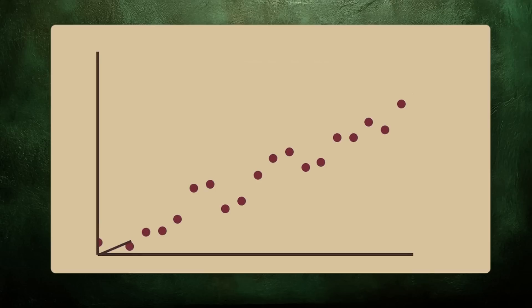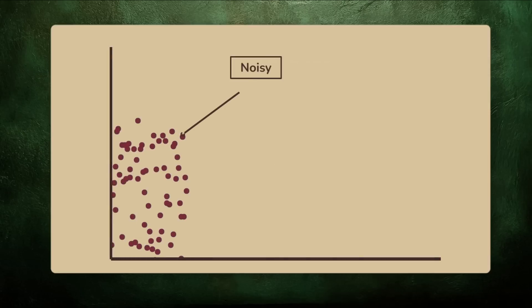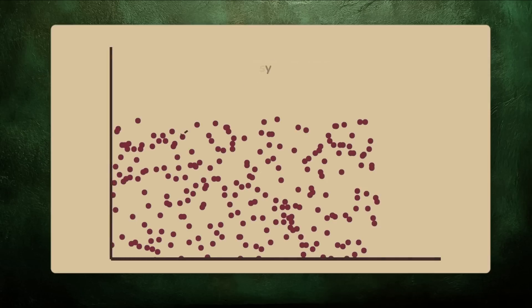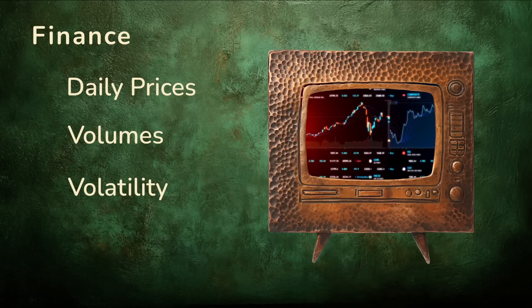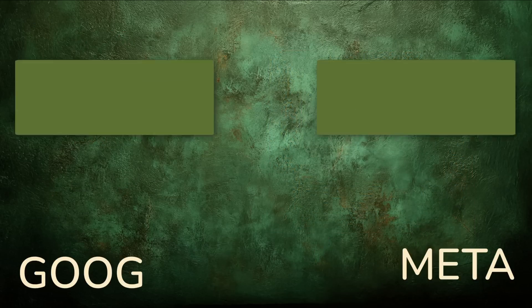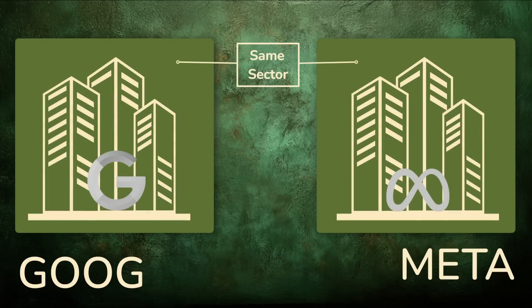When you're working with just a handful of points, it's easy to spot patterns. But real-world data rarely makes it that easy. It's noisy, full of outliers and overlapping effects that obscure what you're looking for. Finance is a classic example. There's no shortage of data: daily prices, volumes, volatility, and an endless search for relationships worth acting on. Take Google and Meta. Both are large tech companies, both in the same sector. You might expect their performance to be related. But what does that mean in practice?